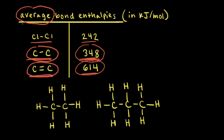The reason these are average bond enthalpies is because if we look at two different molecules — ethane on the left and propane on the right — breaking a carbon-carbon single bond in ethane has a slightly different bond enthalpy than breaking a carbon-carbon single bond in propane. That's why we use average bond enthalpies.